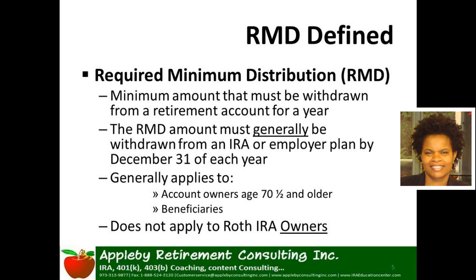So now the question becomes, who is subject to this required minimum distribution rule? Generally speaking, individuals who are at least age 70 and a half and older, and beneficiaries. You'll hear me say generally speaking a lot because when we discuss the rules that apply to IRAs, there is almost always an exception to the general rule.